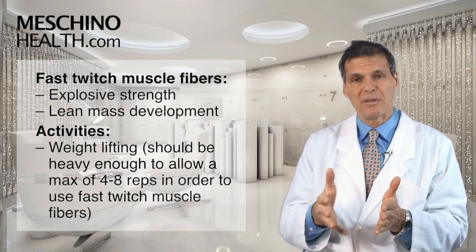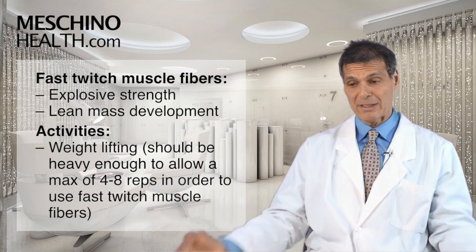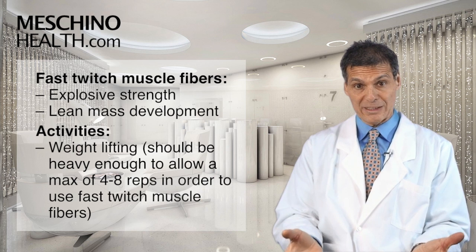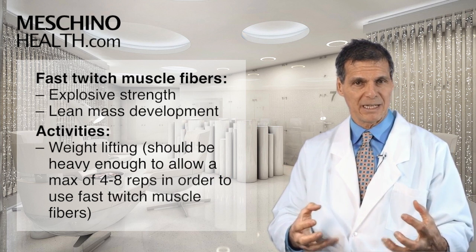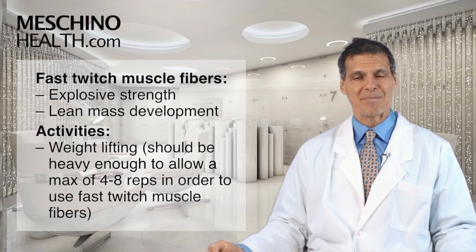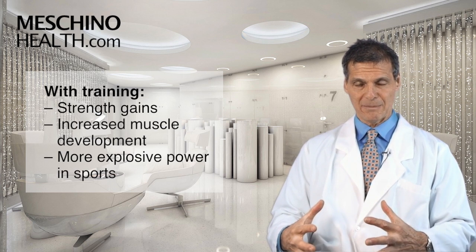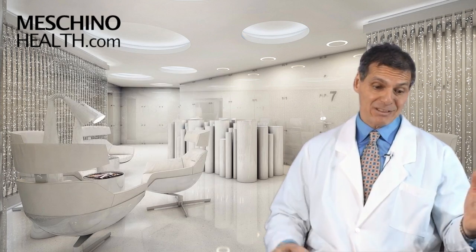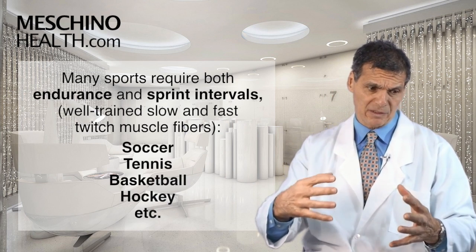For explosive strength, you need more explosive training or weight training. Say you're doing bicep curls — if you do 25 repetitions, that's more endurance activity and you're training your slow twitch muscle fibers. But if you make the weight so heavy that you can only lift it four, five, or six times, then your fast twitch muscle fibers become the primary fibers working. When there's that kind of high-intensity work, you're using your fast twitch type 2 fibers. When you train those, you get more muscle development, more of an anabolic effect, more explosive power, and more lean mass gains.